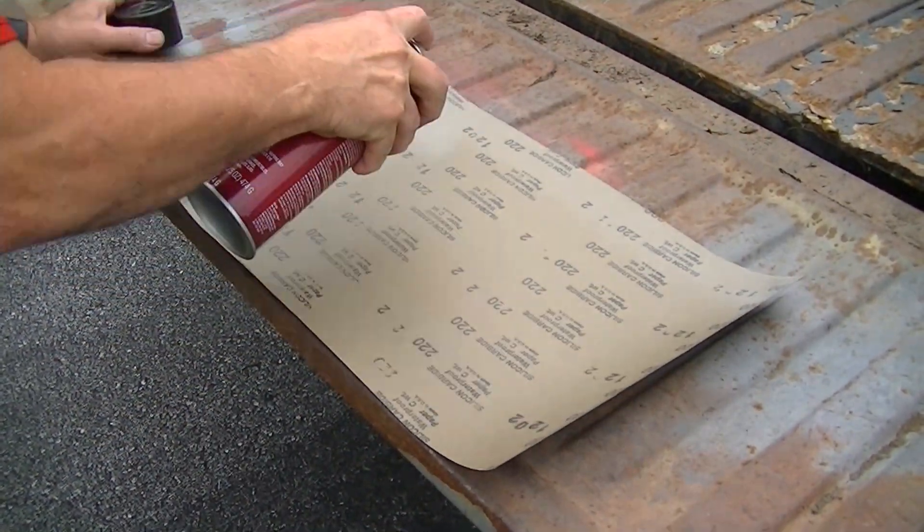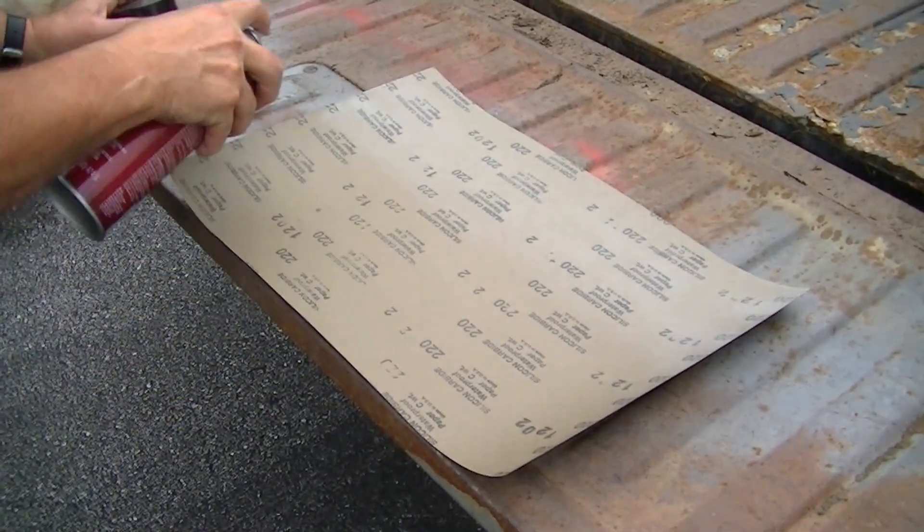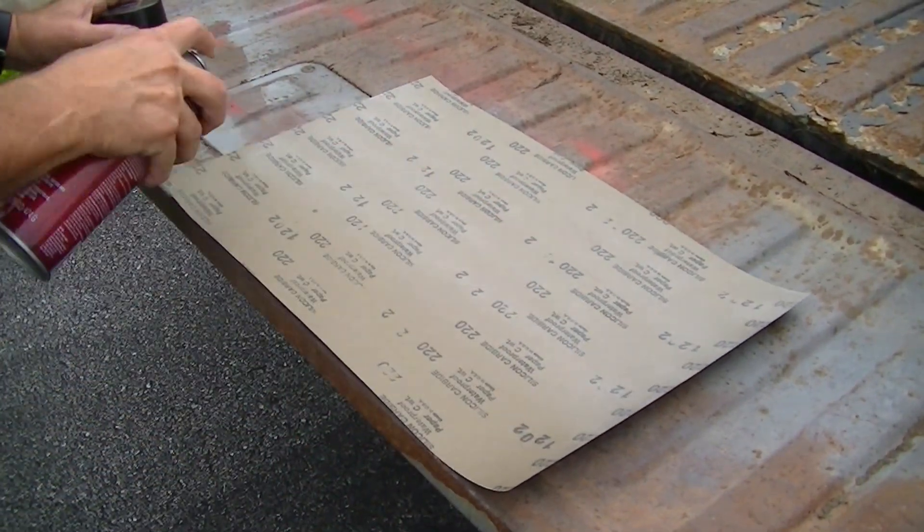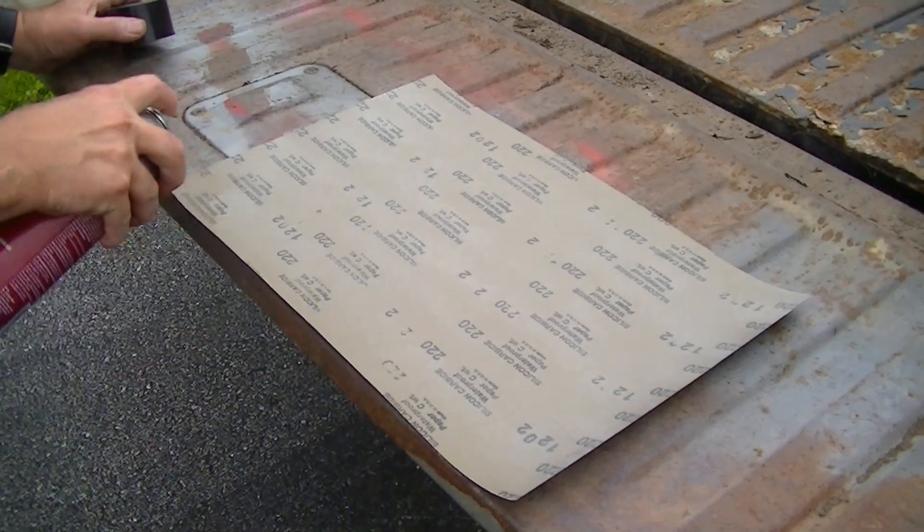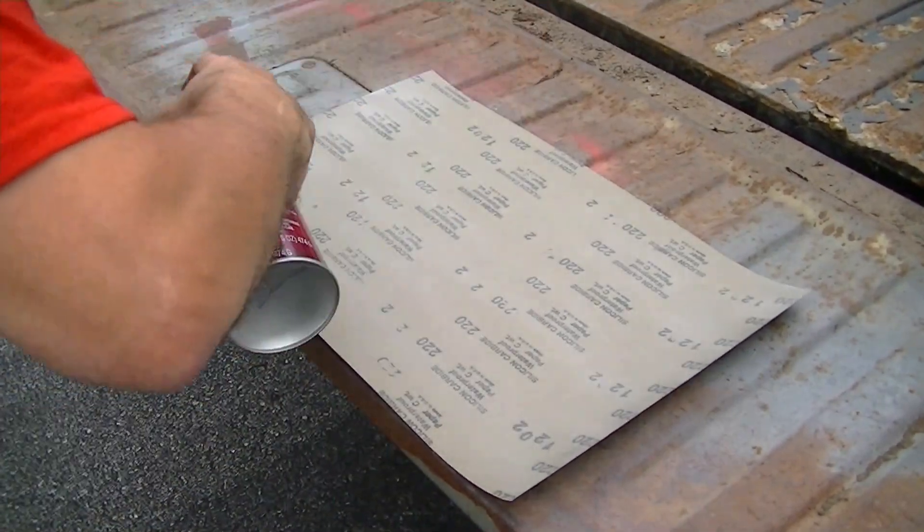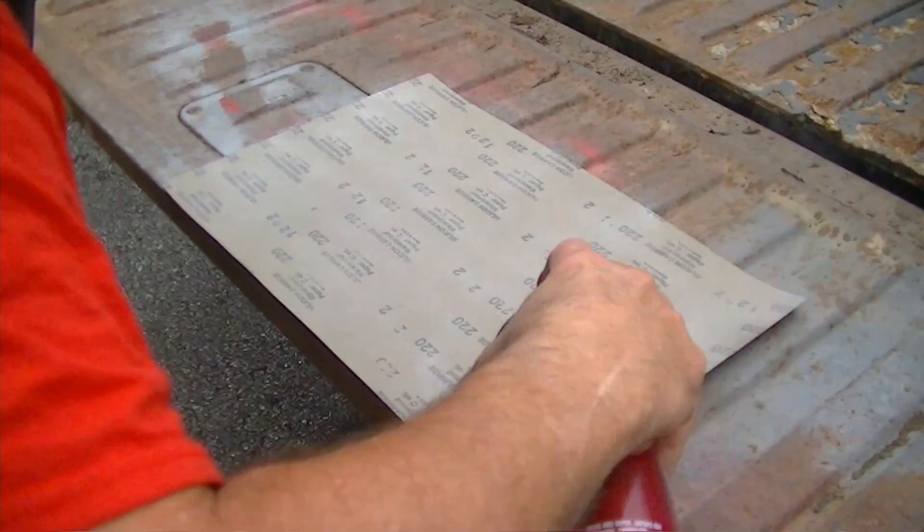I pre-cut my piece of paper to have some overhang. It is already the width of the plate. 3M77 spray, shaking well. A couple of nice even passes. You just want a nice even coverage. You don't want a huge buildup on it. That's it.